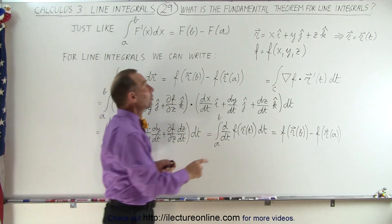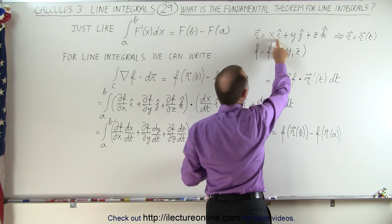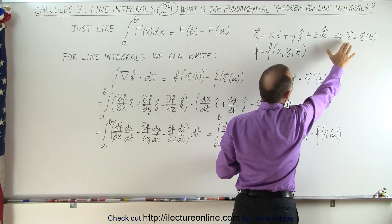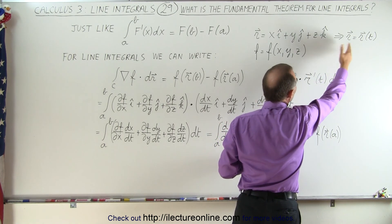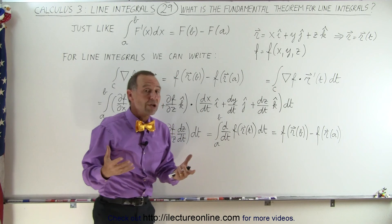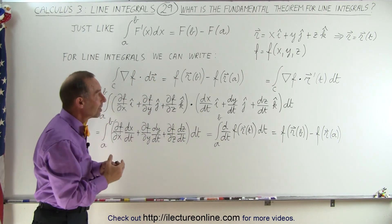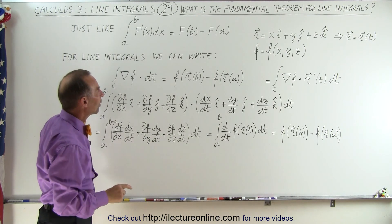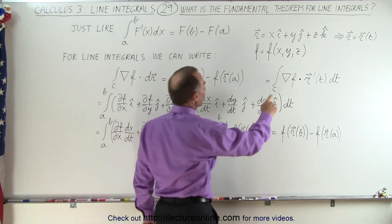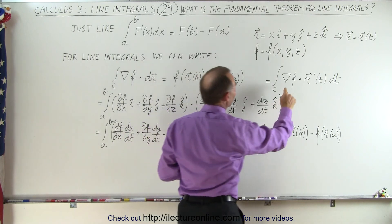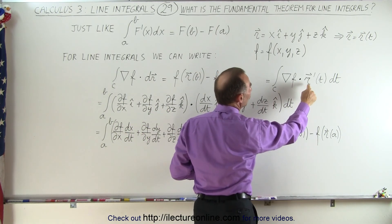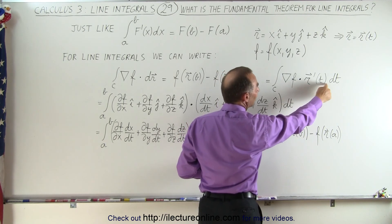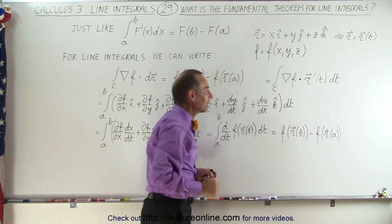We also have the position vector, defined as x times i plus y times j plus z times k. Eventually we're going to write the position vector in terms of the parametric variable t — the so-called parametric equations — and we're going to do that for both f and r. So we can write this integral as the gradient of f dotted with the derivative of the position vector in terms of t times dt.